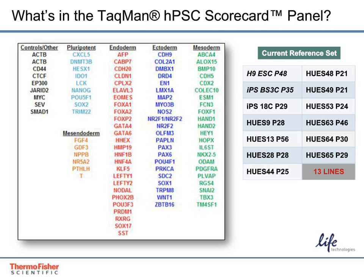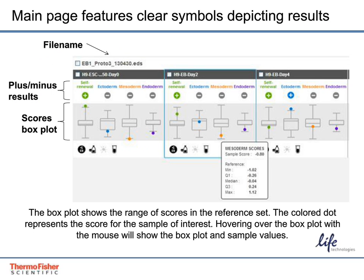Now that you've seen the genes in the panel and the lines included in the reference set, let's review the main results page. You will see the name of the file the data came from at the top of the page. Sample names are shown in the dark gray header bar and can be modified by simply clicking on the text next to the checkbox. The plus and minus signs indicate whether the sample statistically matches up more closely with the undifferentiated reference set or the EB reference set. The light gray box plots indicate the range of scores for the 13 lines in the undifferentiated reference set and the colored dots correspond to the sample scores. Hovering over a box plot will show values for both the sample score and the reference range.